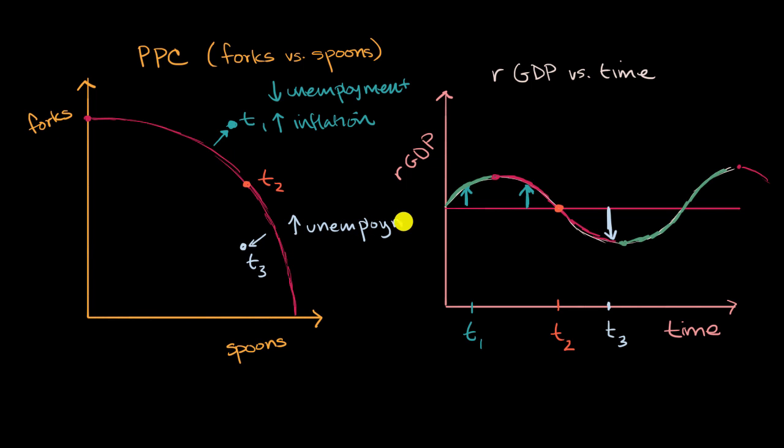And because both labor and oftentimes other resources aren't being fully utilized, there might not be a lot of price pressure. So in this situation, inflation would be lower. And in extreme cases, you could even have negative inflation, which we would call deflation.